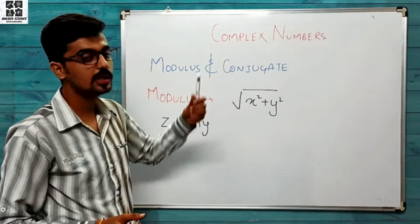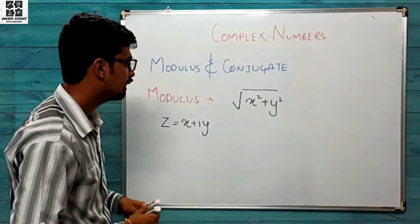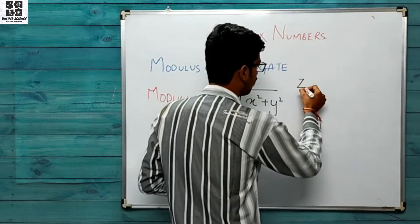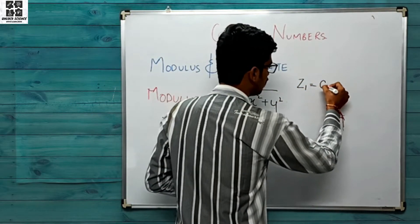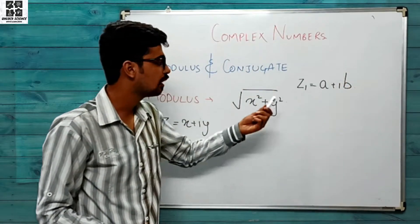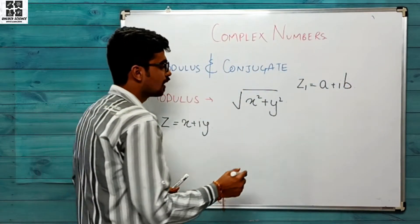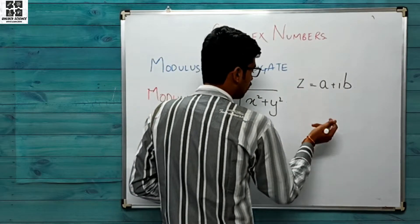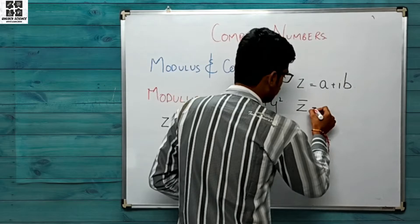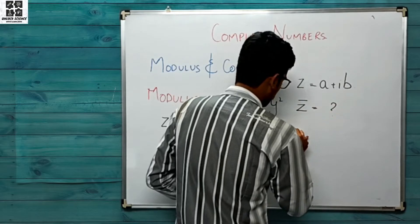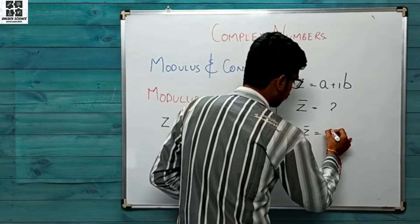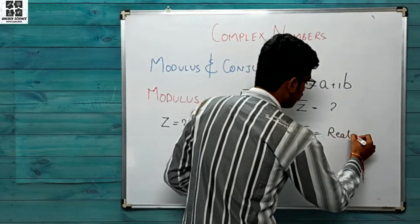Ab conjugate kya hota hai? Conjugate ke liye thoda concept samajhna padega. Agar humne number liya z1, aur isko credentials a + ib diye hain. Ab agar humne isko multiply kiya ek aise number se, ki dono ka product nikl aayega — that will always be a real number.